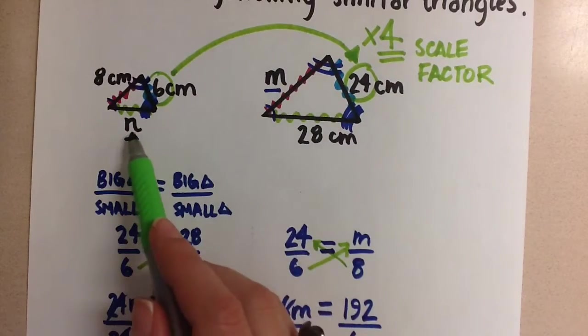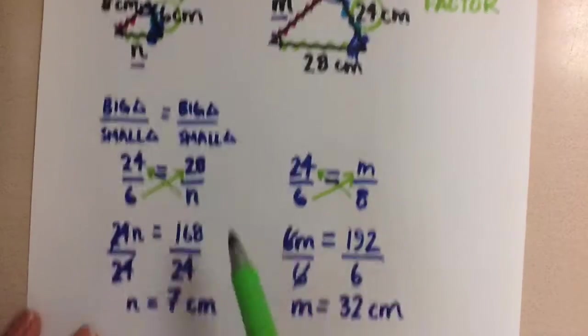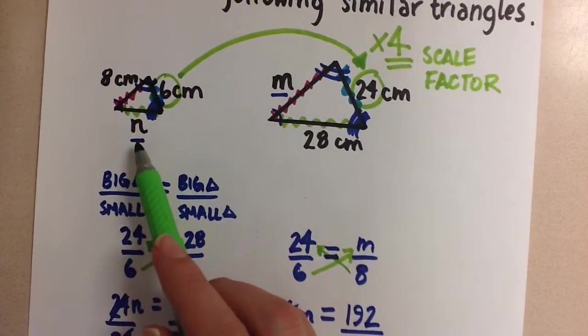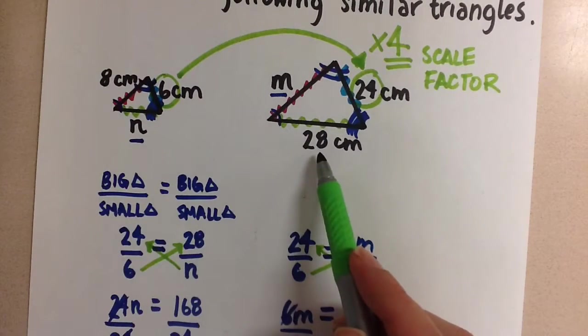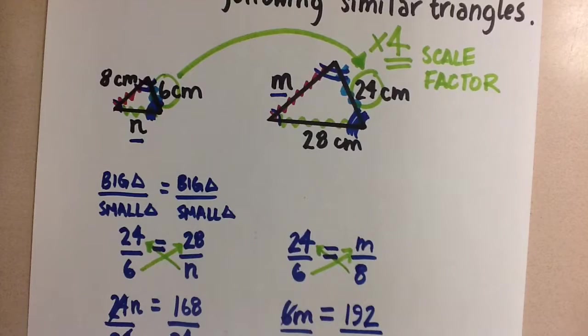And n times 4. So that was, we got 7 times 4 gives us 28. So that answer was correct as well.